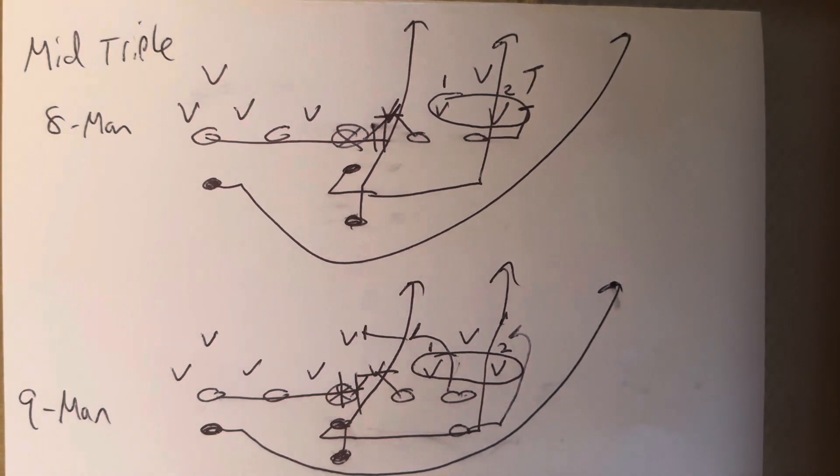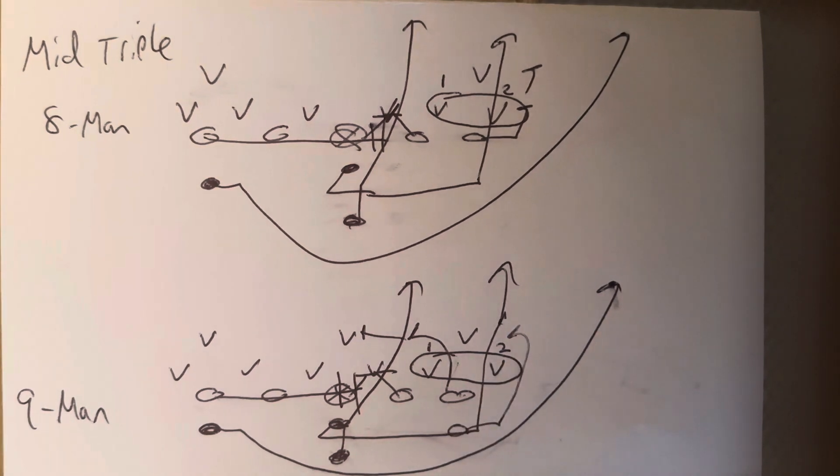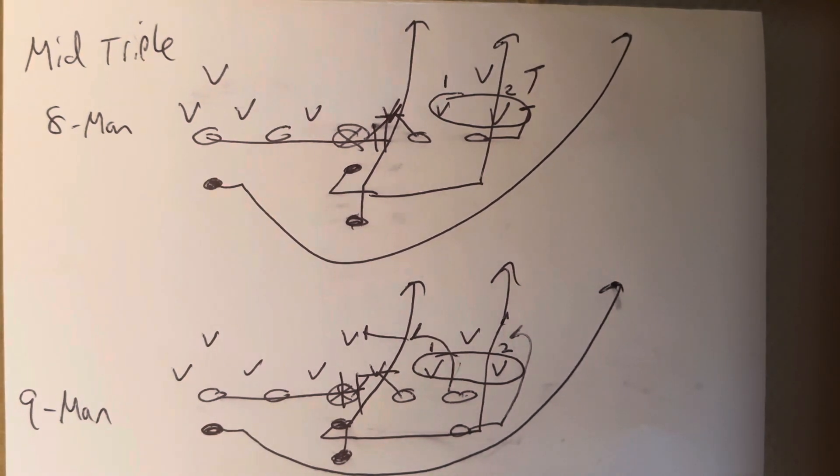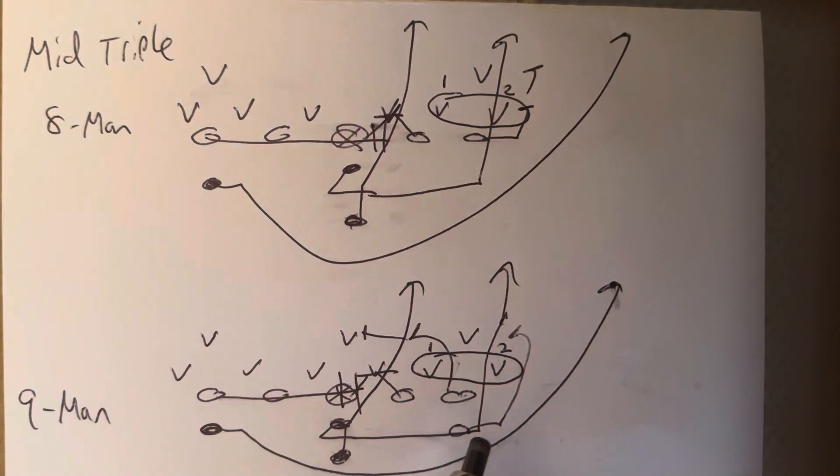Nine-man, it's the exact same thing, except now the A-back's doing what the end did in eight-man football. So he'll take three five-step steps at 45 degrees and block whoever shows in the C-gap. Now, everything's the same,